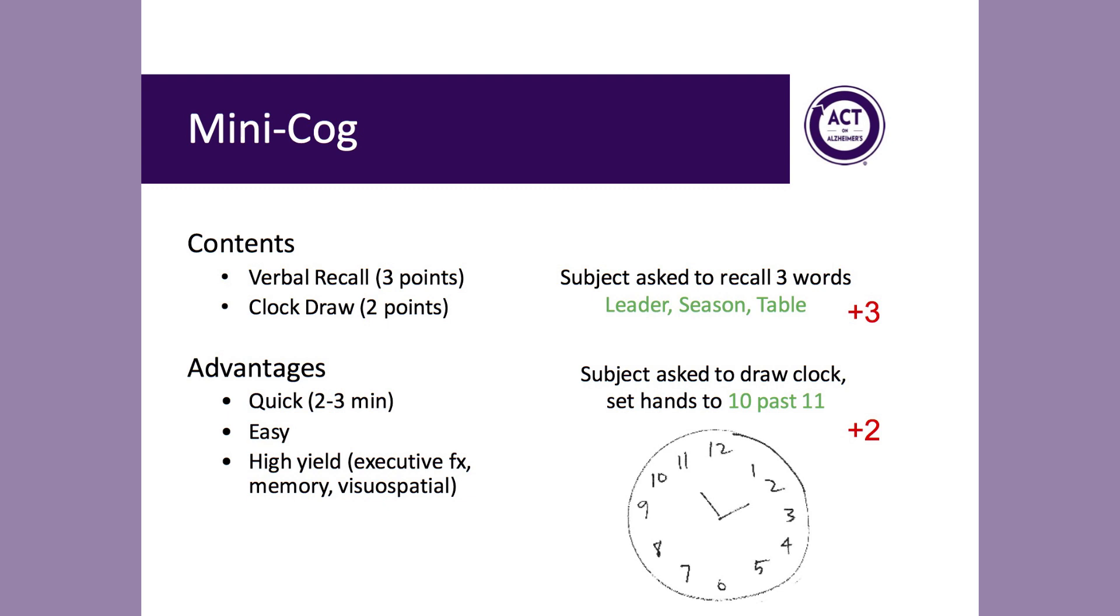First, you give a patient three words to repeat back and to try to remember for later. This is followed by the clock draw, in which you instruct individuals to draw a clock, include all the numbers, and set the time to 10 past 11. The Mini-Cog is then scored on a five-point scale. A successful clock draw is worth a total of two points, and the list recall after the clock is worth up to three points.